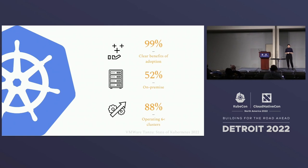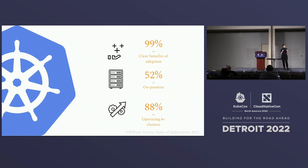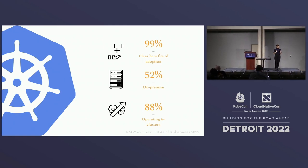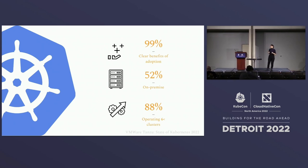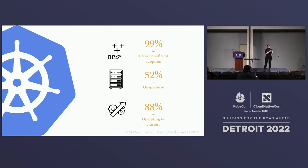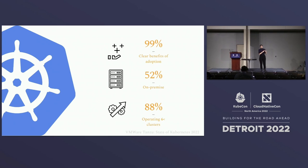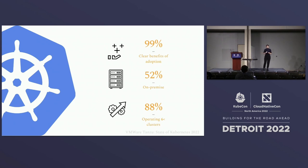We can see this in numbers. Based on the VMware Tanzu State of Kubernetes report released this year, 99% of organizations see a clear benefit of using Kubernetes — the first reason being better usage of CPU and memory, and the second being ease of application management, especially throughout the upgrade process. A metric I'd like to highlight, very relevant for this talk, is that 52% of organizations still have a need for bare metal.